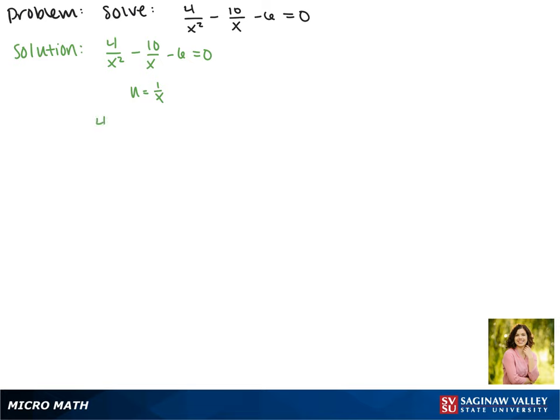Now when we plug u in, this gives us 4u squared minus 10u minus 6 equals 0.